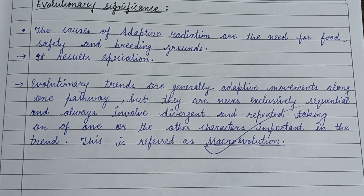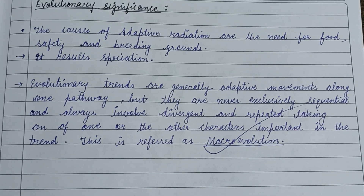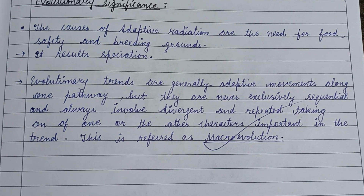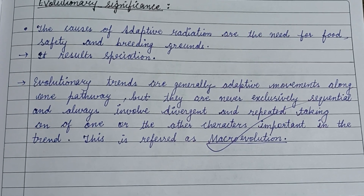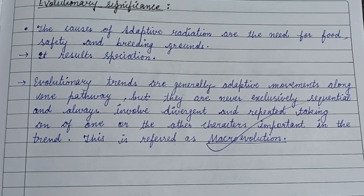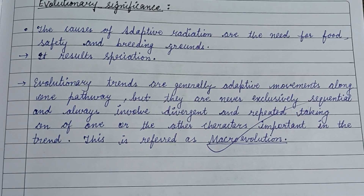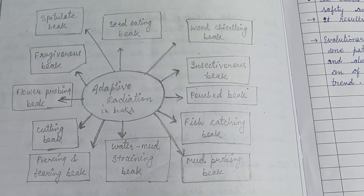The evolutionary significance of adaptive radiation is that evolutionary trends are generally adaptive movements along one pathway, but they are never exclusively sequential and always involve divergent and repeated taking of one or another characteristic important in the trend. This is referred to as macroevolution.